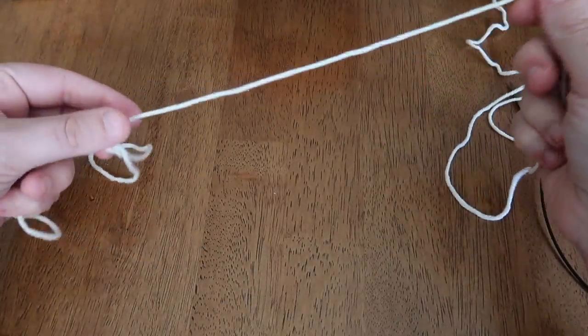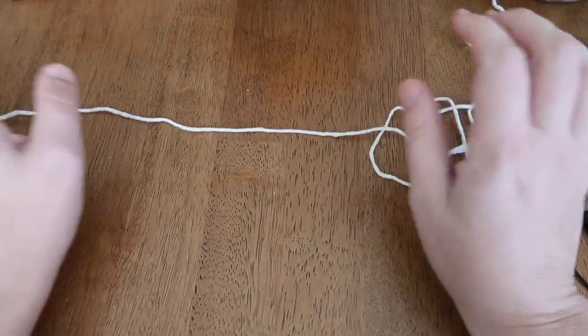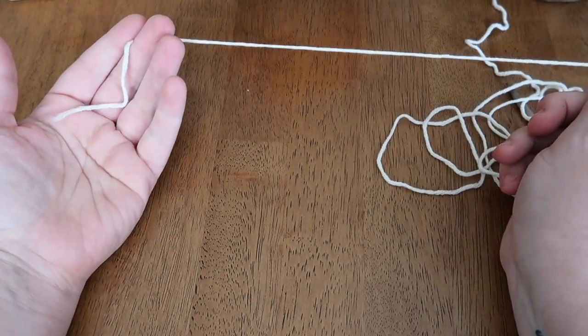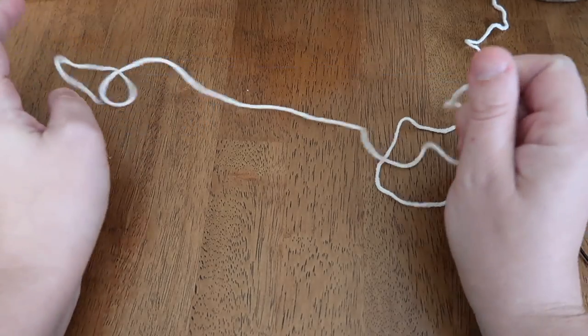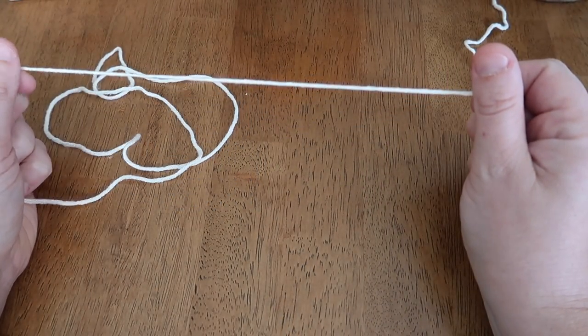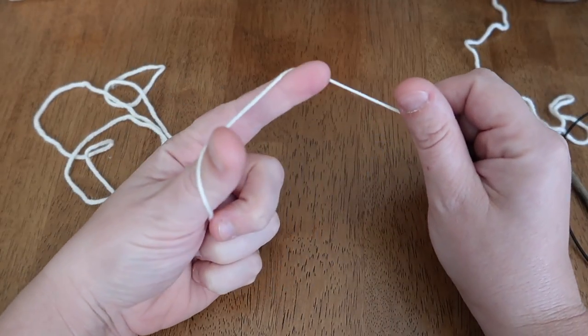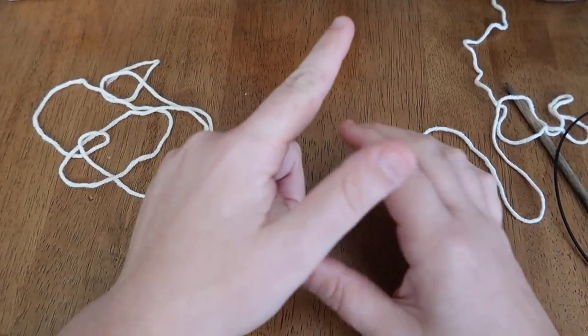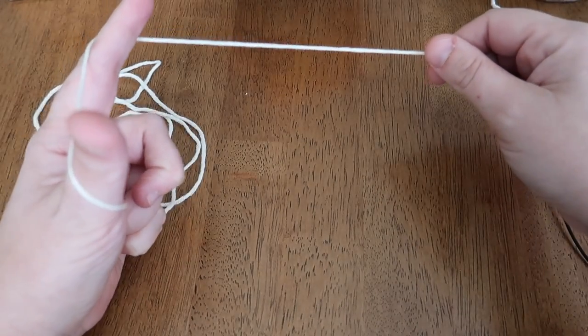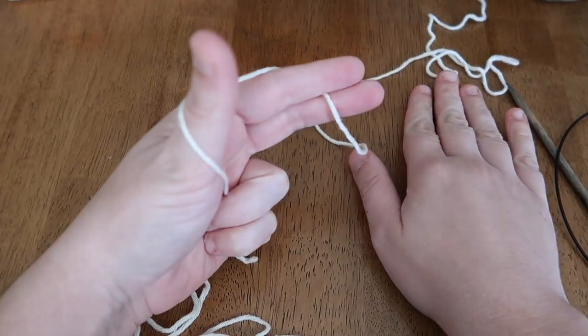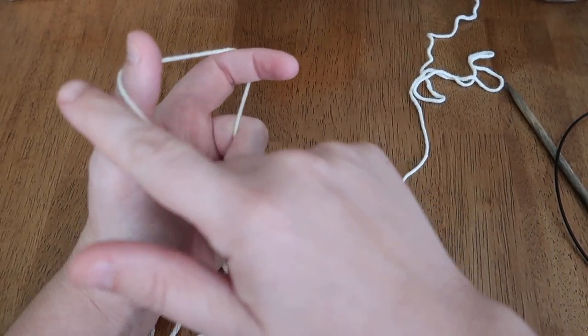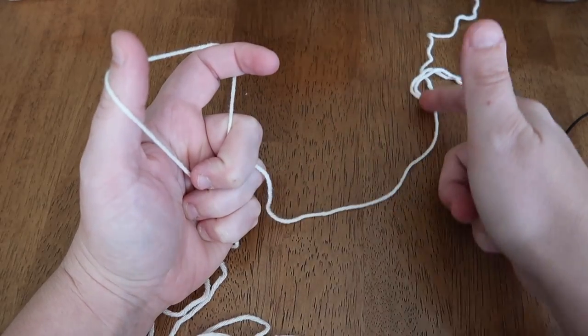I'm going to show you three cast on methods, starting with my favorite, which is the long tail cast on. Long tail implies you need a long tail. The first step is to pull out as much yarn as you need to do your cast on. I like to measure down my arm if I'm doing larger projects. Then you're going to wrap your yarn around your fingers as I'm doing here. The tail goes around the outside of my thumb and then around my pointer finger and then out to the ball. That is the basic setup.